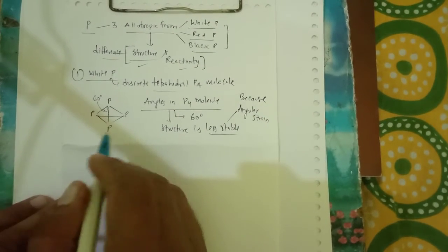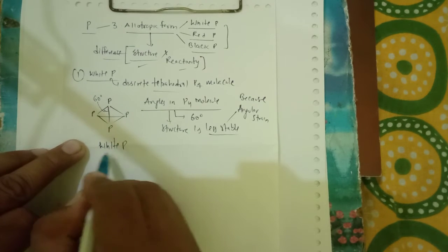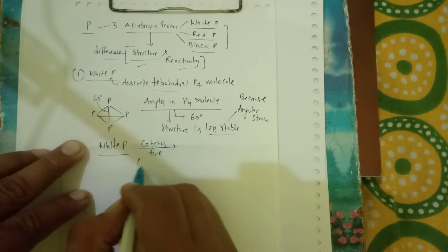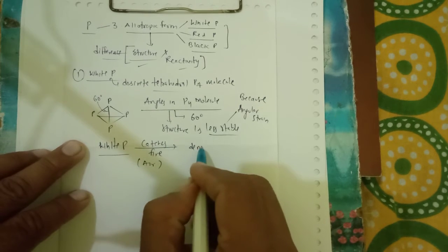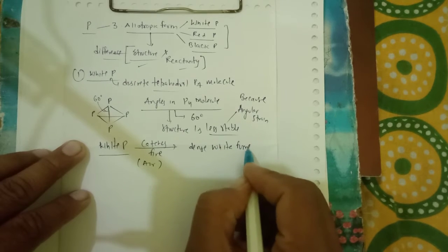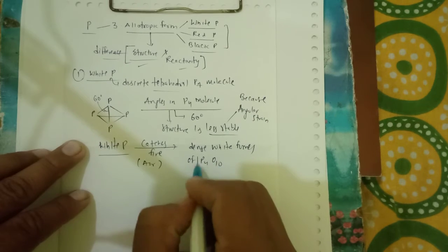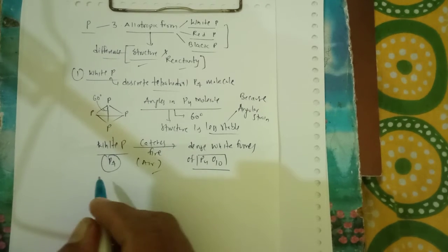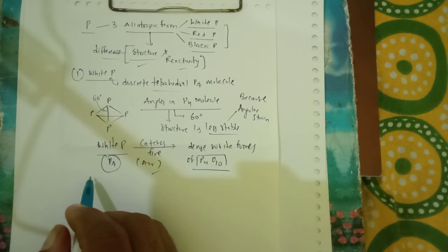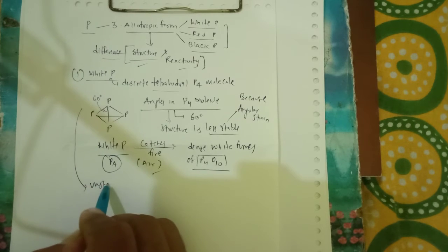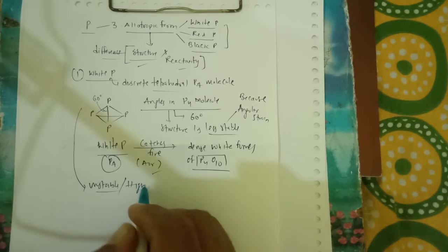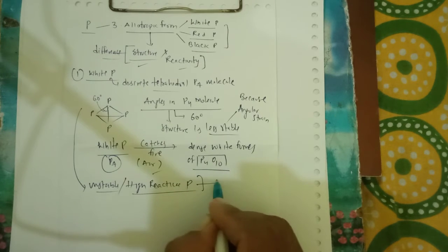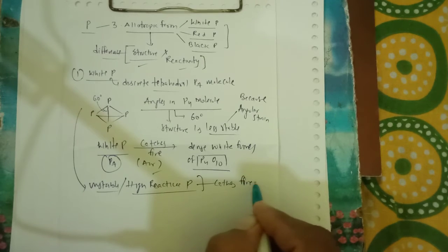One more thing is very important: white Phosphorus readily catches fire in air to give dense white fumes of P4O10. White Phosphorus is unstable and highly reactive Phosphorus which catches fire in air.